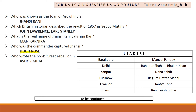What was the real name of Rani Lakshmibai? It was Manikarnika. The commander who captured Jhansi was Hugh Rose. After the revolt, one writer mentioned that one of the firmest and strongest Indian leaders was Jhansi Rani. Who wrote the book 'The Great Rebellion'? It was Ashok Mehta.